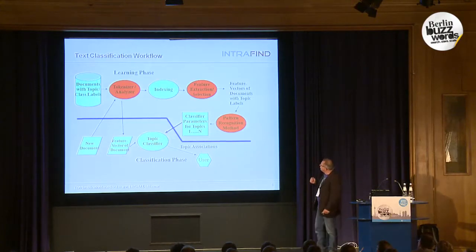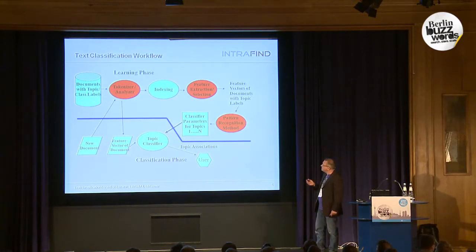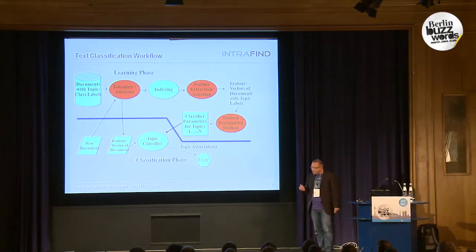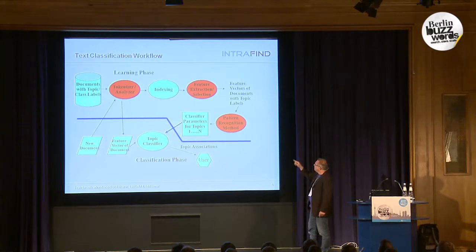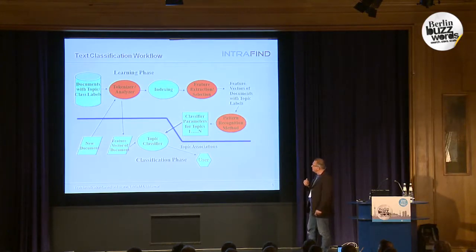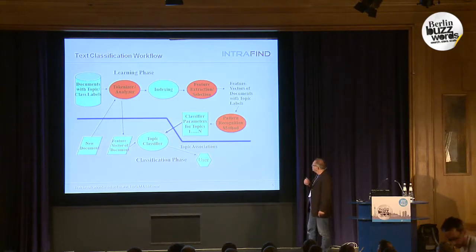This is the general workflow of a text classification system. You have a learning phase in which you present example documents to the system, and the result of the learning phase are classification rules — one rule for each topic. These rules are stored and used in the production or classification phase to classify new documents. In the learning phase, we can identify three different steps: since classification is based on the bag-of-words model, you use a tokenizer or analyzer, then a feature extraction step, and after that the actual machine learning step that produces the classification rules.